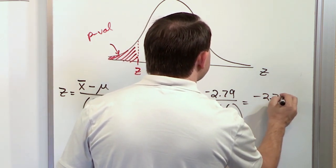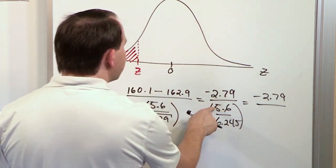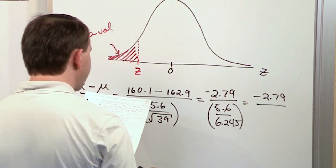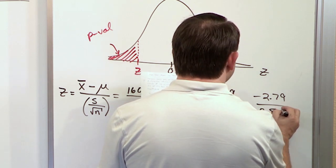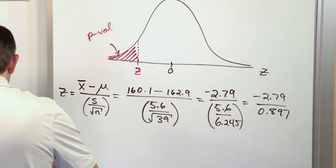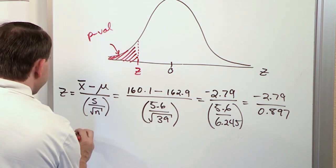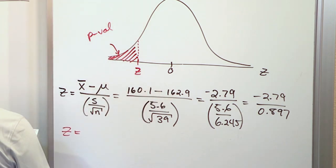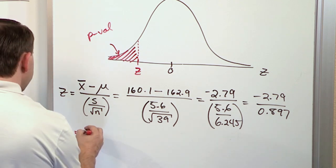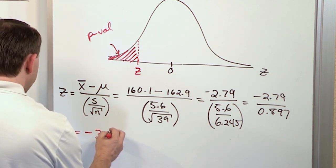And we'll wrap that in parentheses. So we have negative 2.79. And on the bottom, when you divide these numbers, 5.6 divided by 6.245, you get 0.897. So basically, we just have to divide those two numbers. And when we do that, we will get a value of z. We'll take negative 2.79 divided by 0.897. We get negative 3.110.